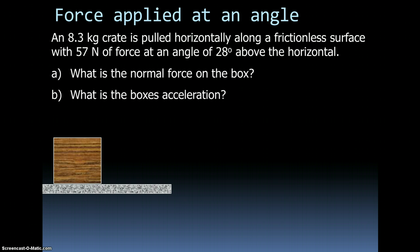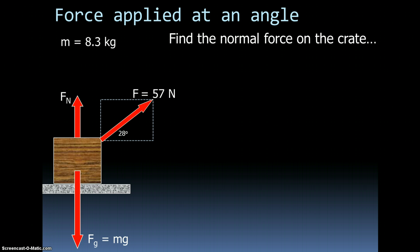Alright, so let's look at a problem. We've looked at it from vectors. Let's put some numbers in there. We have a crate being pulled horizontally along a frictionless surface. We want to know what is the normal force on the box, and what is the box's acceleration. The first thing I'm going to do is draw my free body diagram. These are all the forces acting on the box. Of course, I've labeled them. I've also labeled some of my variables here, the variables that were given in the problem.